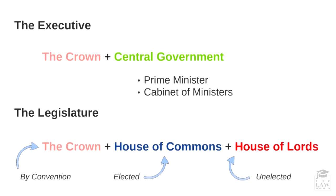The executive is made up of the Crown or the monarchy as well as central government. Central government is composed primarily of the Prime Minister, who is the head of state, as well as the Cabinet of Ministers. On the other hand, the legislature — the body that has the power to make laws — is made up once again of the Crown, the House of Commons, and the House of Lords. The UK has a bicameral parliament, and the legislature is made up of these three parts based on three different pillars of reasoning.